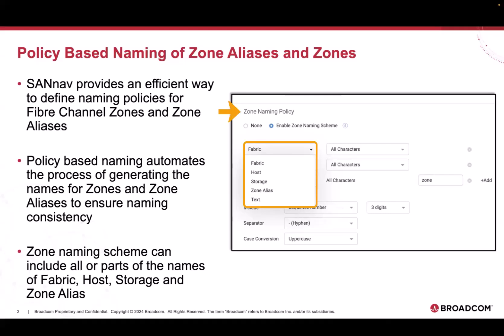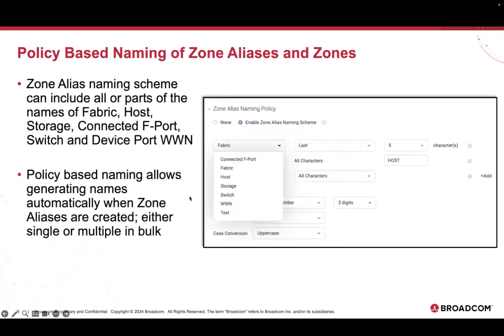The figure on the right shows the naming scheme, which can include all or parts of the names of the fabric, port, storage, zone aliases, and also a free text. Similarly, the zone alias naming scheme can include all or parts of the names of the fabric, port, storage, connected F port, switch, and WWN, as well as a free text.